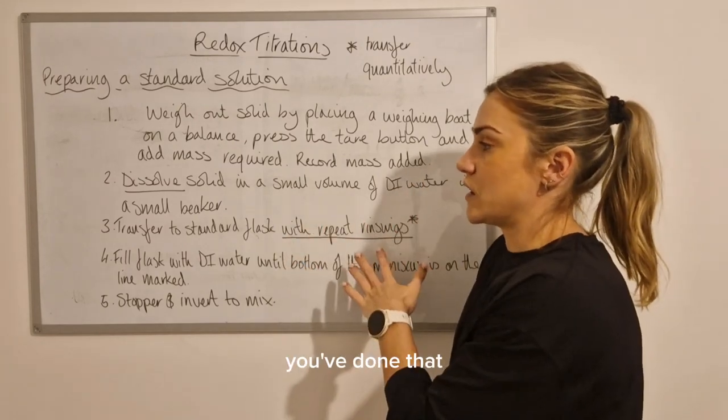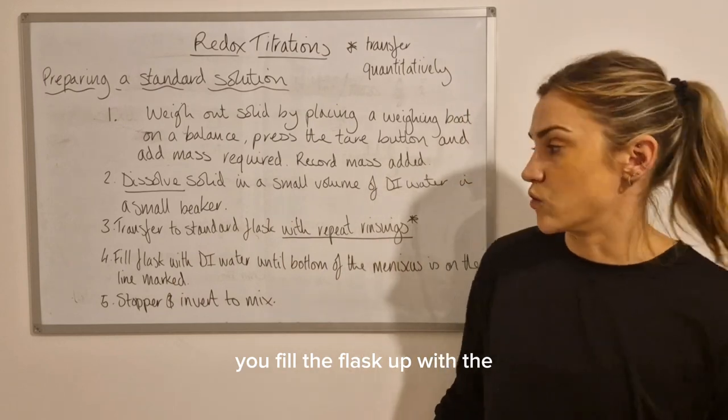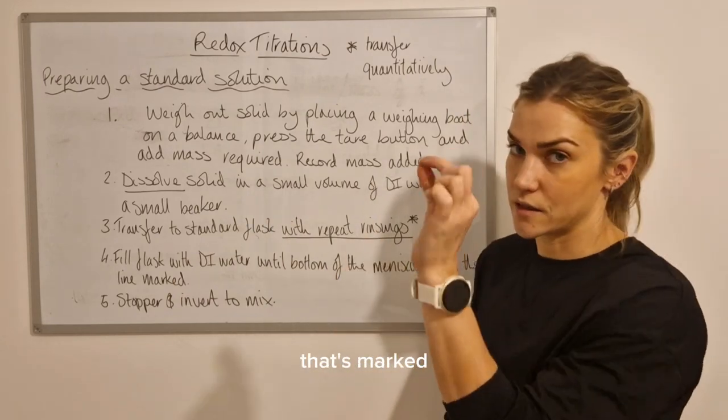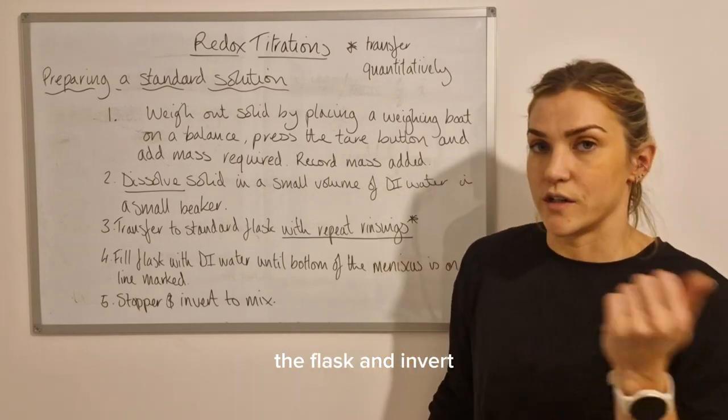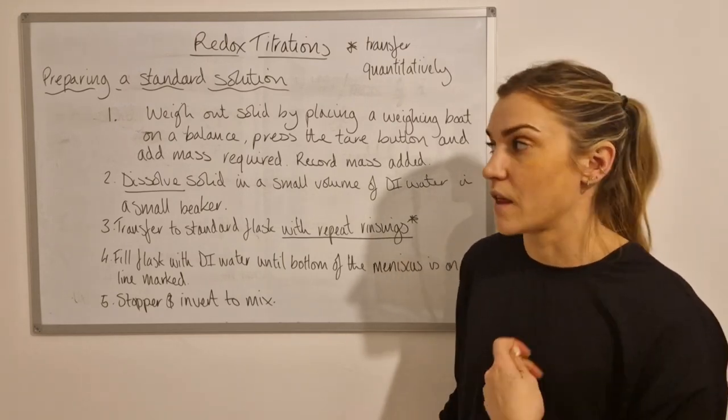Once you've done that, you fill the flask up with deionized water until the bottom of the meniscus is on the line that's marked, and then you would stopper the flask and invert the solution to mix, and that's it.